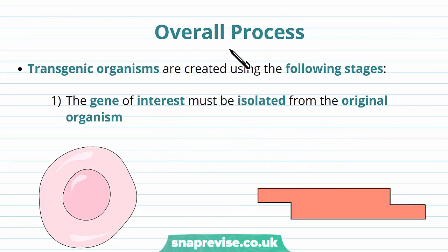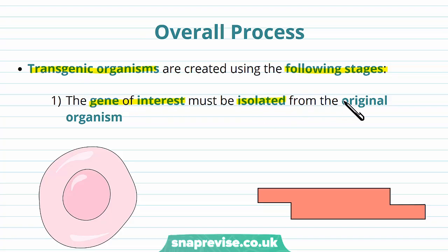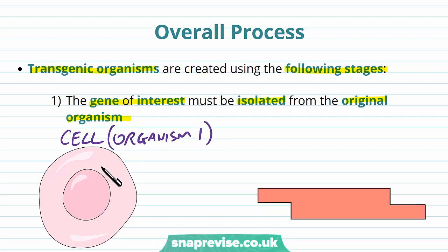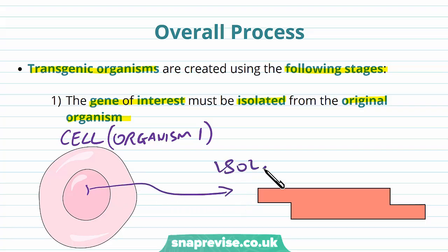We're going to go through the overall process of genetic modification of an organism. Transgenic organisms are created using the following stages. First, we get the gene of interest — the gene we wish to transfer to another organism — and we isolate it so it's on its own from the original organism. We isolate that gene completely from end to end, and this gene makes a desirable product, for example a drug molecule or hormone.